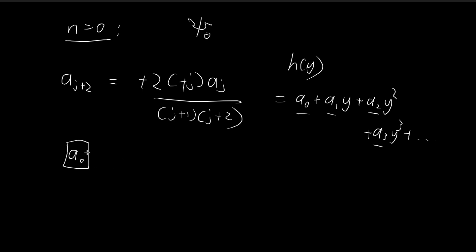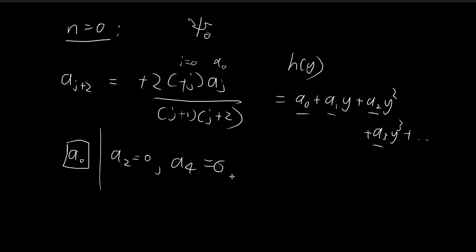Starting with a0 and substituting into the recursion formula with j equal to 0, we get a2 equals 0, because j equals 0 gives zero multiplied by something. So we've already stopped the recursion at the first step. Since a2 equals 0, a4 equals 0, and all subsequent even-subscript terms are all equal to 0.